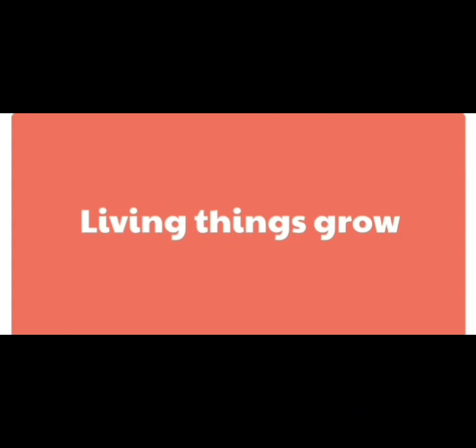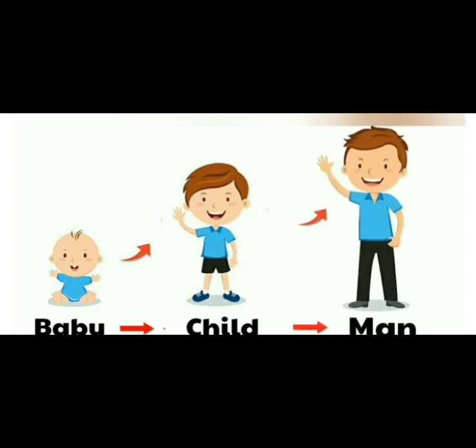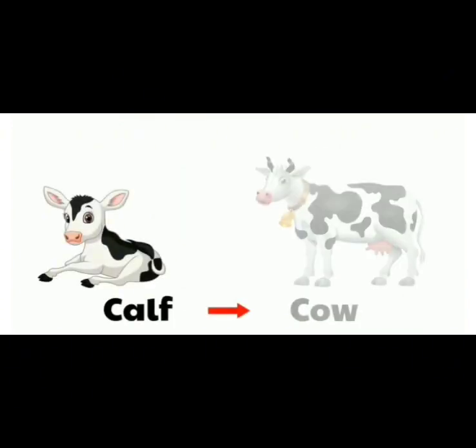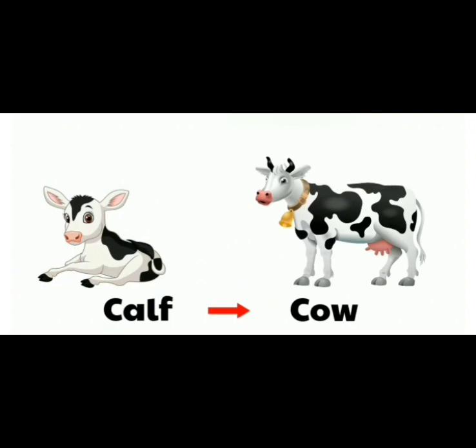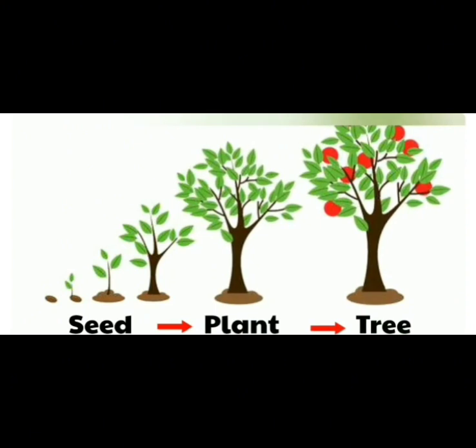Living things grow. A baby grows into a child, which then grows into a man. A calf grows into a cow. A seed grows into a plant, which then grows into a huge tree.